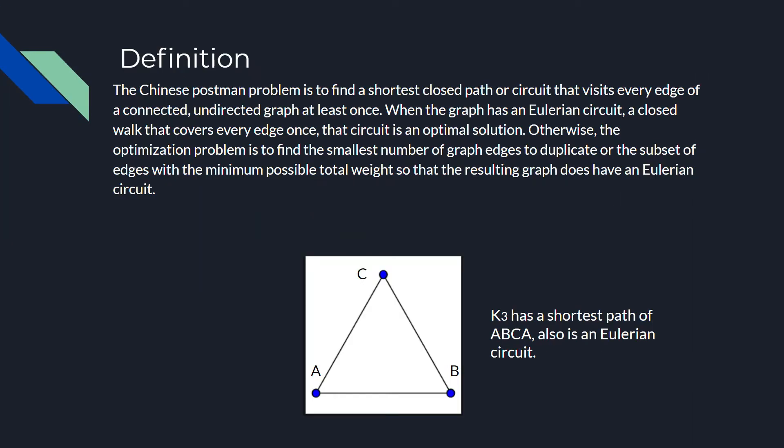So, first things first, let's lay the groundwork for a definition for this problem. The Chinese postman problem is to find a shortest closed path or circuit that visits every edge of a connected, undirected graph at least once. When the graph has an Eulerian circuit, a closed path that covers every edge once, that circuit is an optimal solution. Otherwise, the optimization problem is to find the smallest number of graph edges to duplicate, or the subset of edges with the minimum possible total weight so that the resulting graph does have an Eulerian circuit.